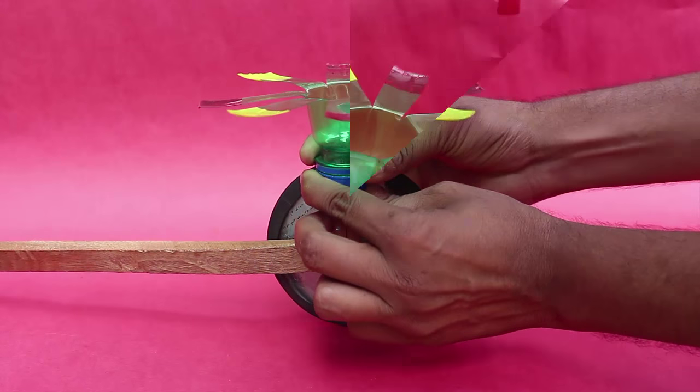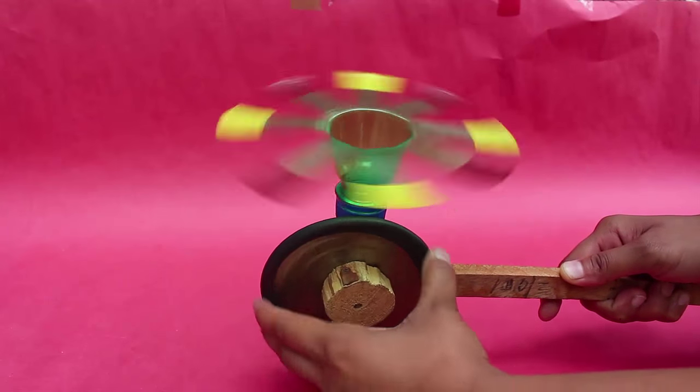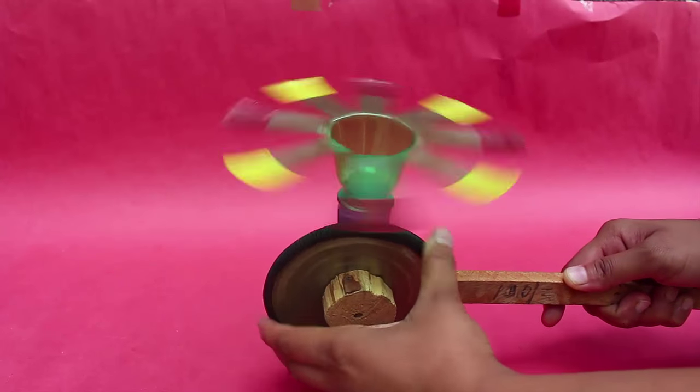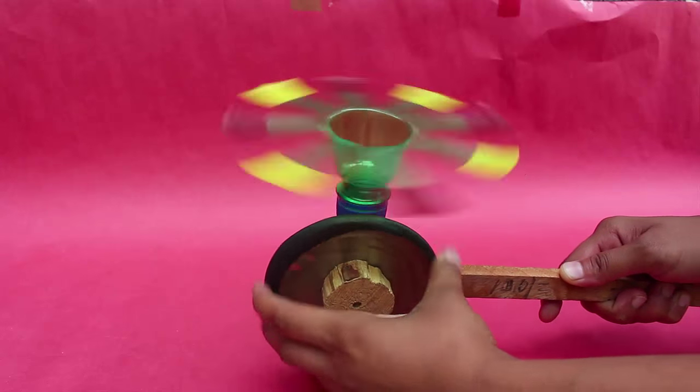Now as you turn the wheel, the lid will spin, thus rotating the bottle fan along with it.